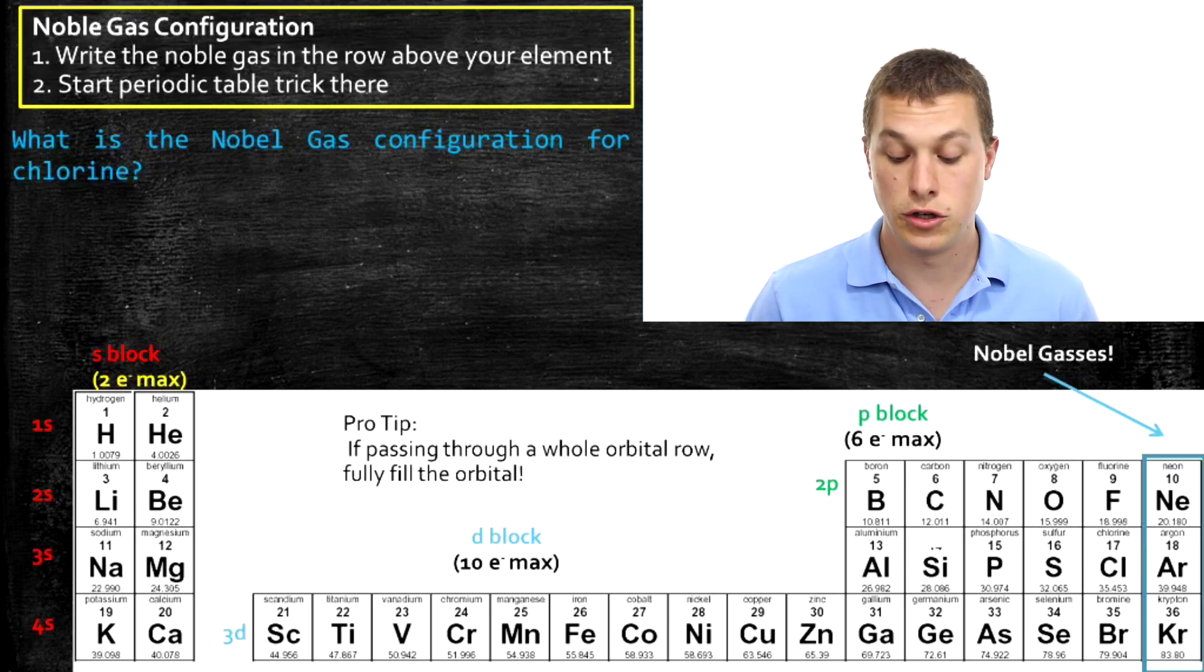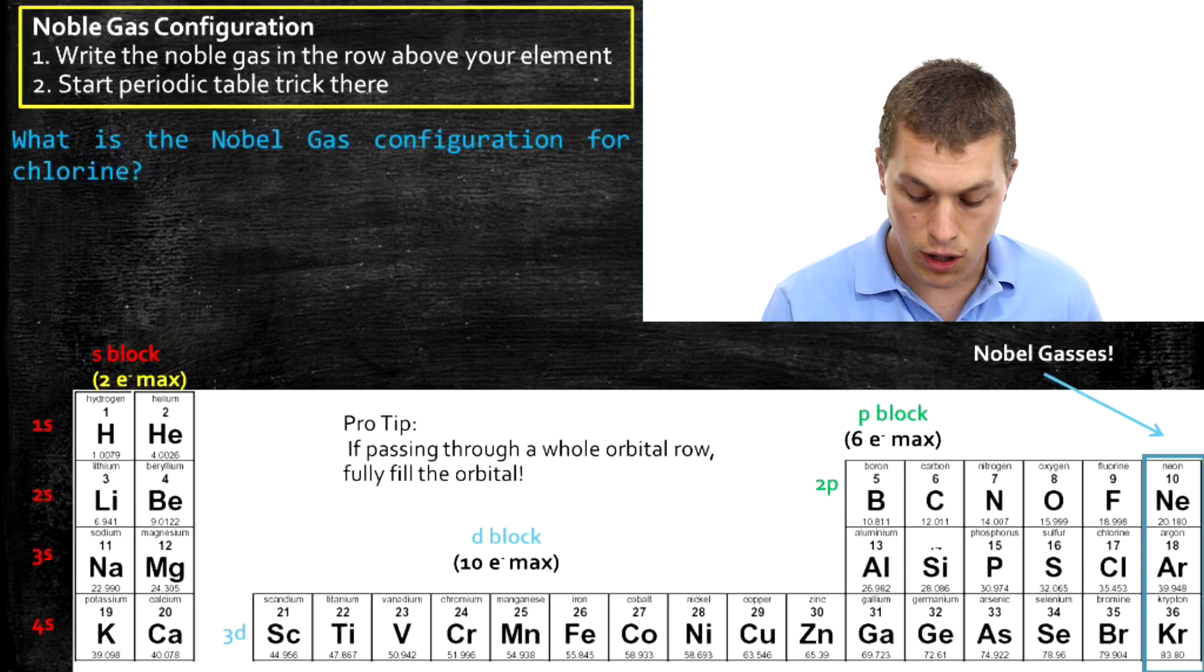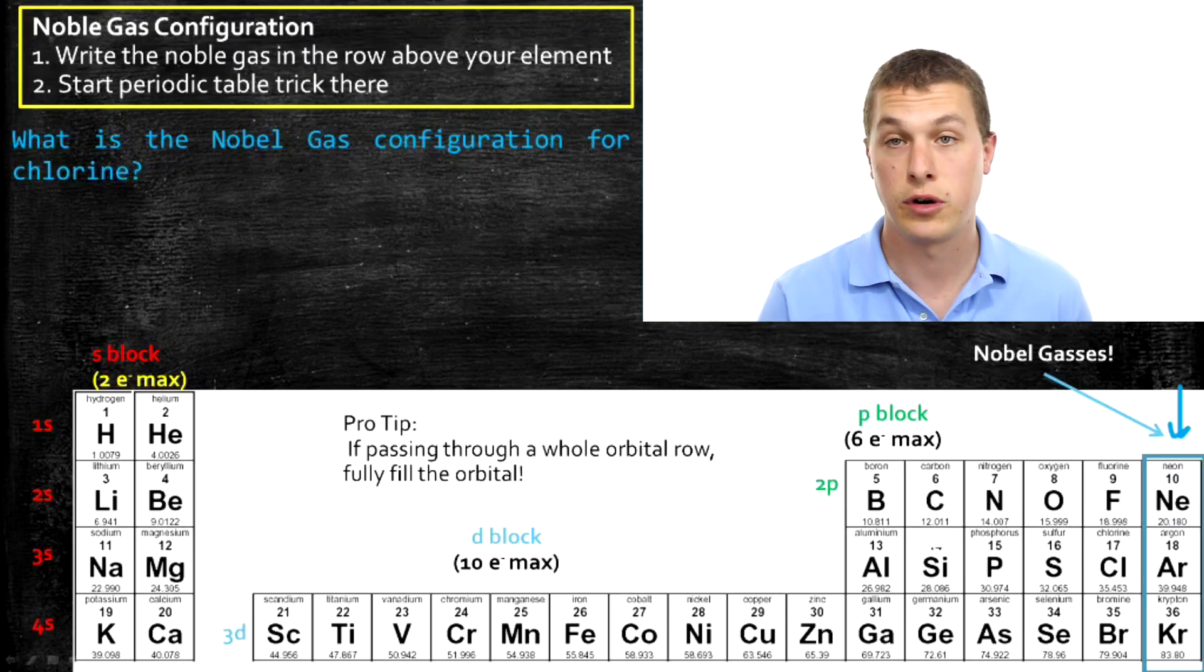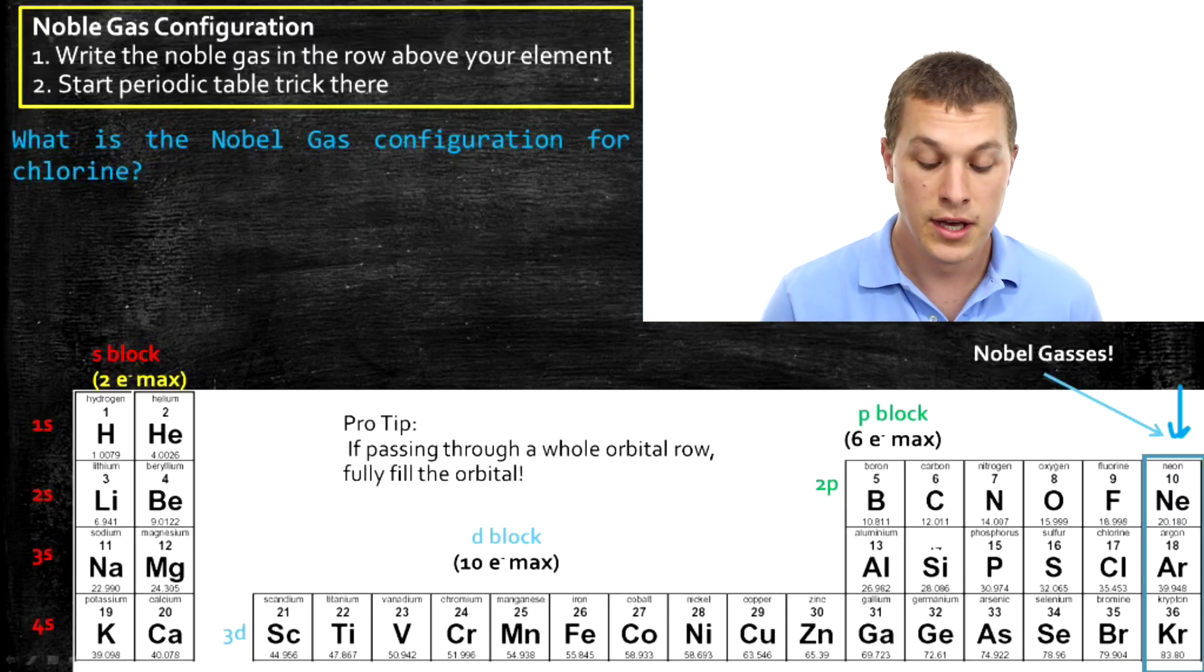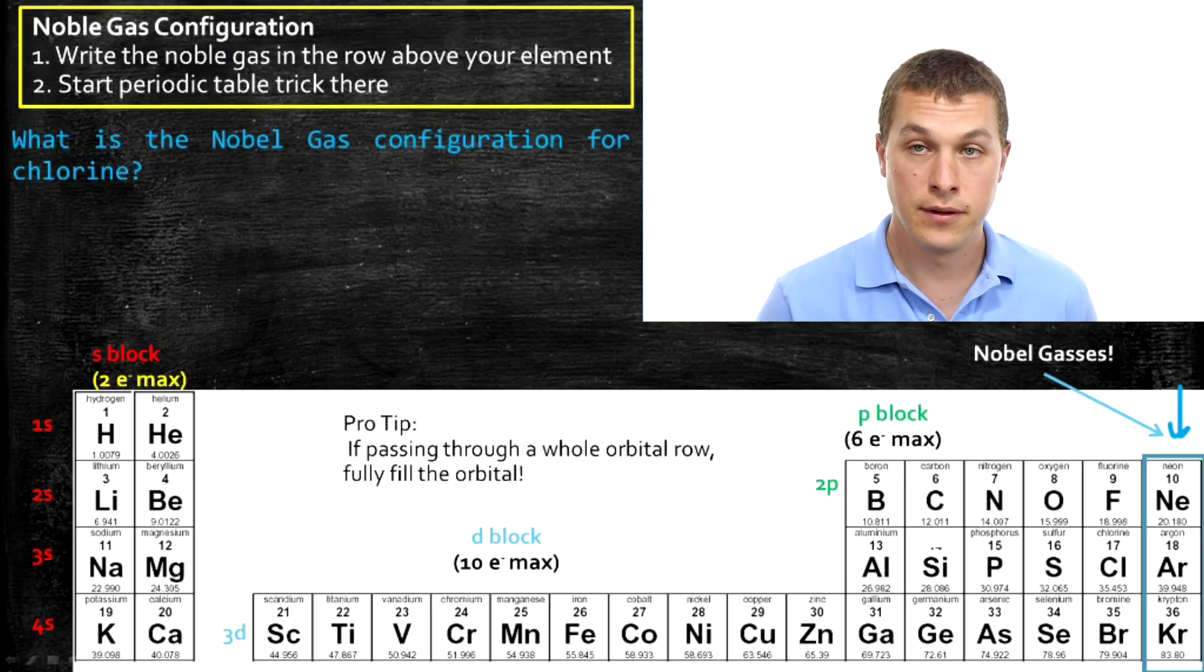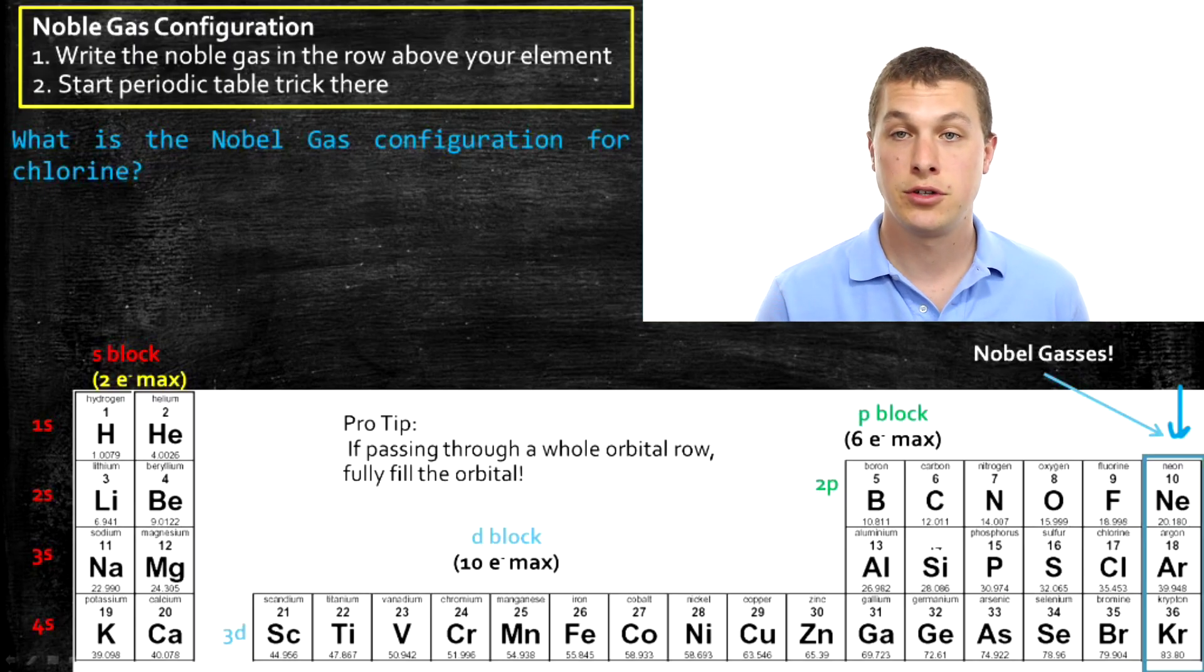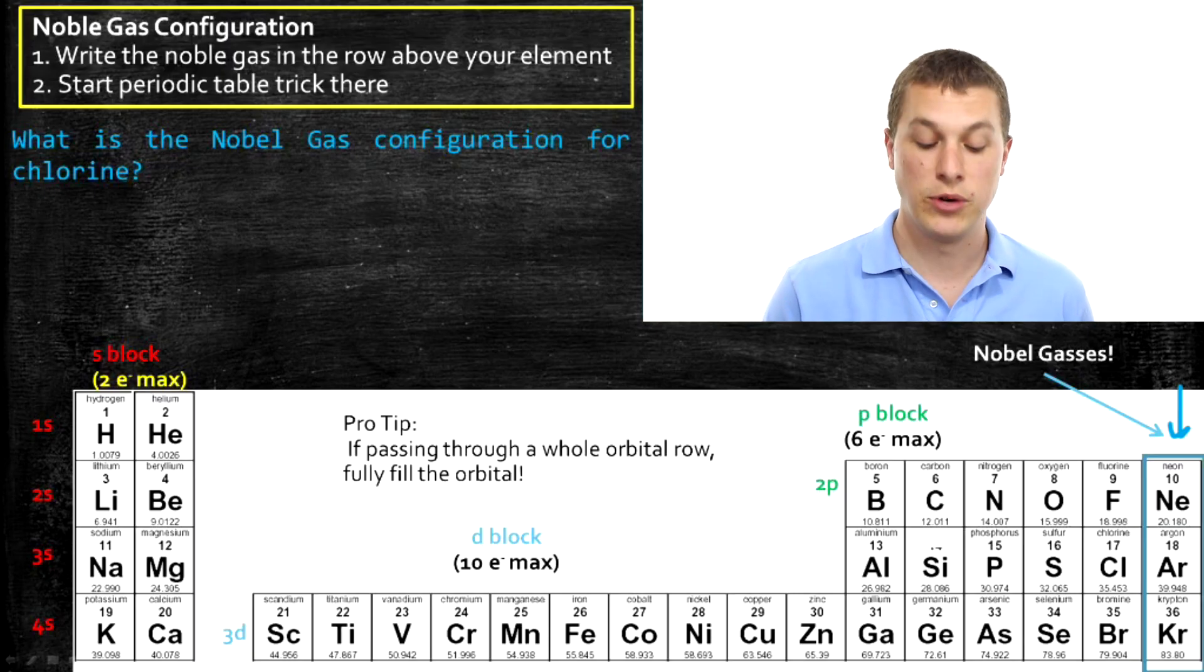A couple things to tell you about there. What's a noble gas? Well, that's in that far row over here, the far column over here. So you can see I boxed it in blue, and everything on this column, even going below krypton, all the way to the bottom of the periodic table, is a noble gas. And so we use those guys to basically abbreviate our electron configurations. And all we do is we go to the element that we're trying to write the electron configuration for. And we go one row up, and we see what noble gas is there.